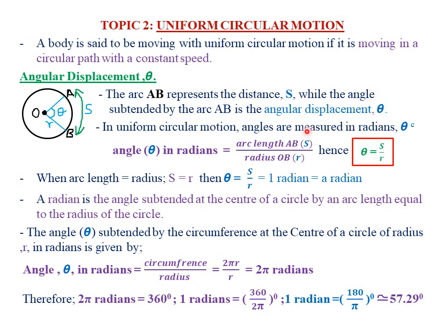In uniform circular motion, angles are usually measured in radians. Angles can be measured in degrees or in radians. The notation theta to the power C simply means that the angle theta is in radians.